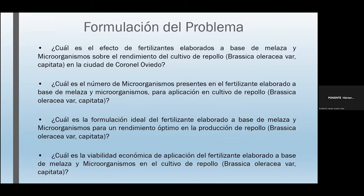Para la formulación del problema se planteó una pregunta general y tres preguntas específicas: ¿Cuál es el efecto del fertilizante elaborado a base de melaza y microorganismos sobre el rendimiento del cultivo del repollo Brassica calabrasia en la ciudad de Coronel Oviedo? ¿Cuál es el número de microorganismos presentes en el fertilizante? ¿Cuál es la formulación ideal para un rendimiento óptimo? ¿Y cuál es la viabilidad económica de su aplicación en el cultivo del repollo Brassica calabrasia?